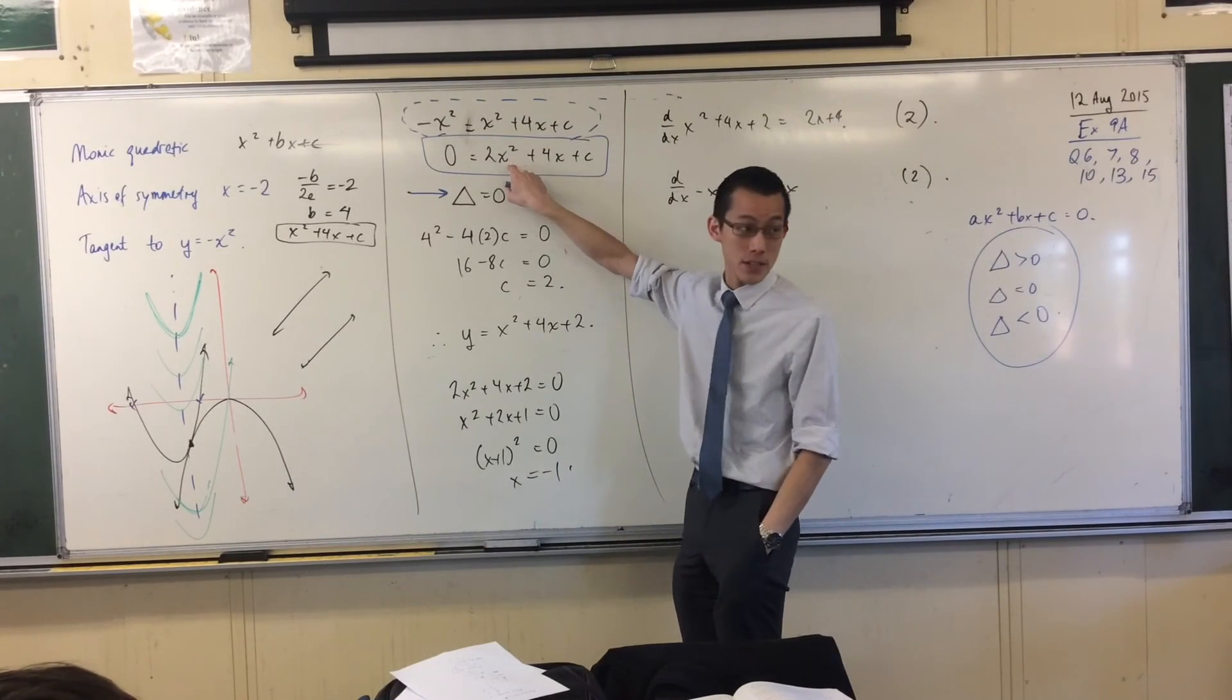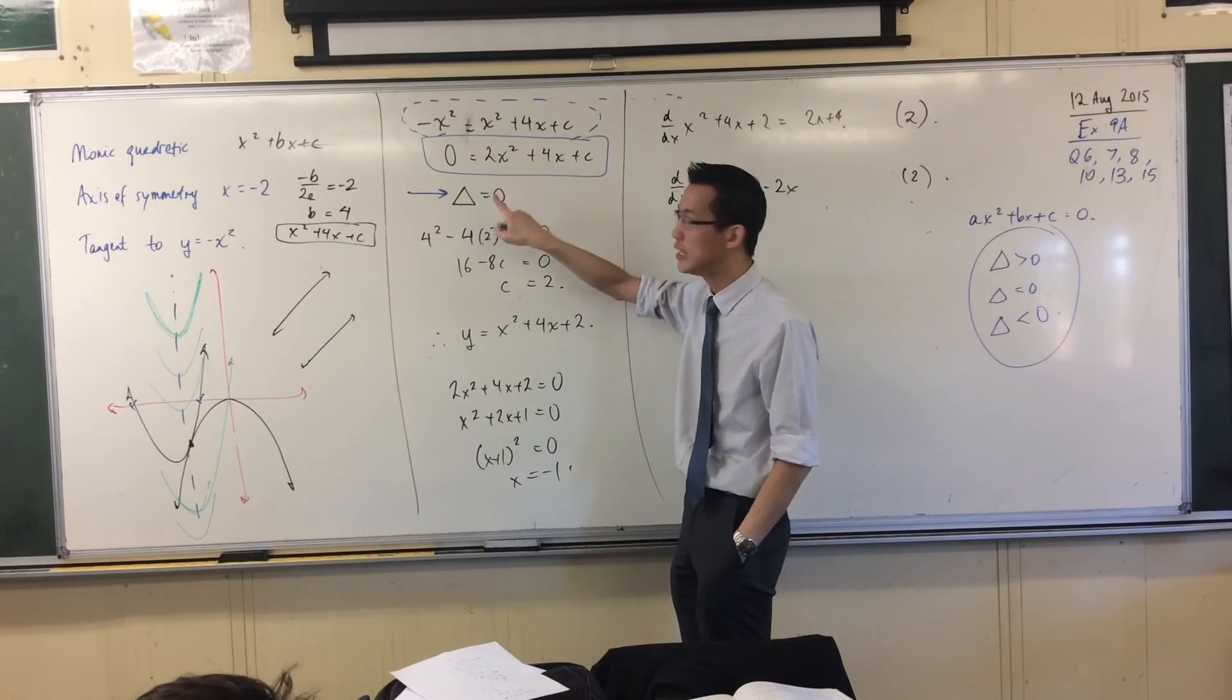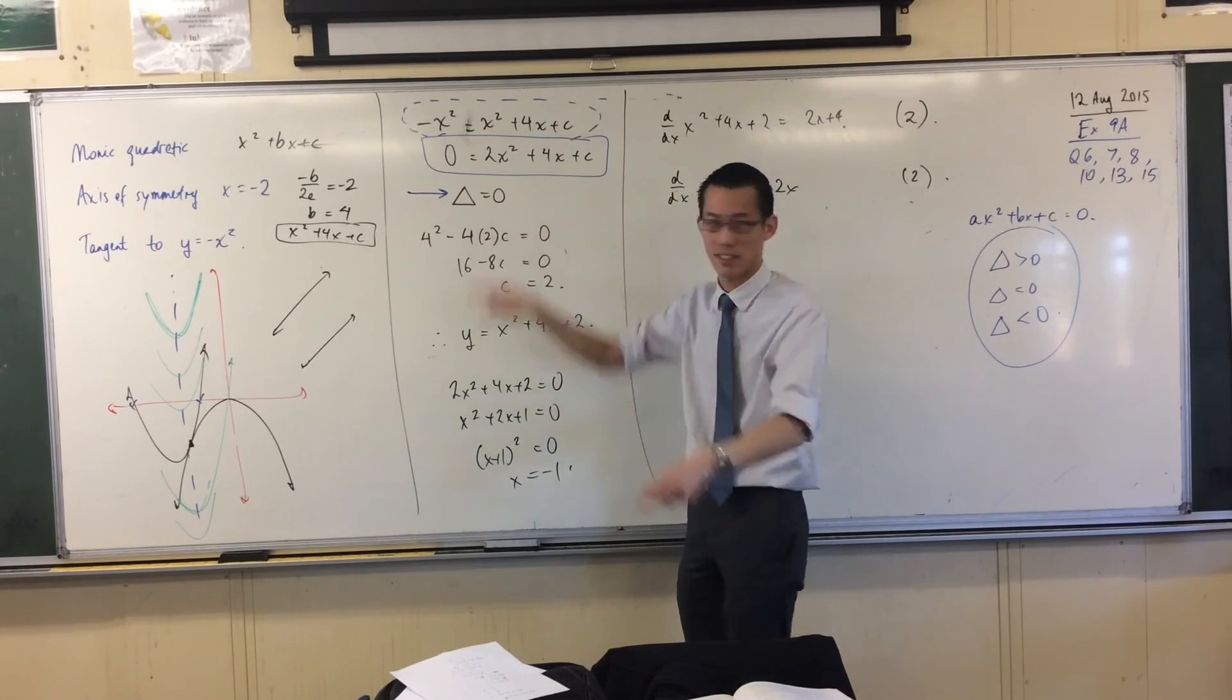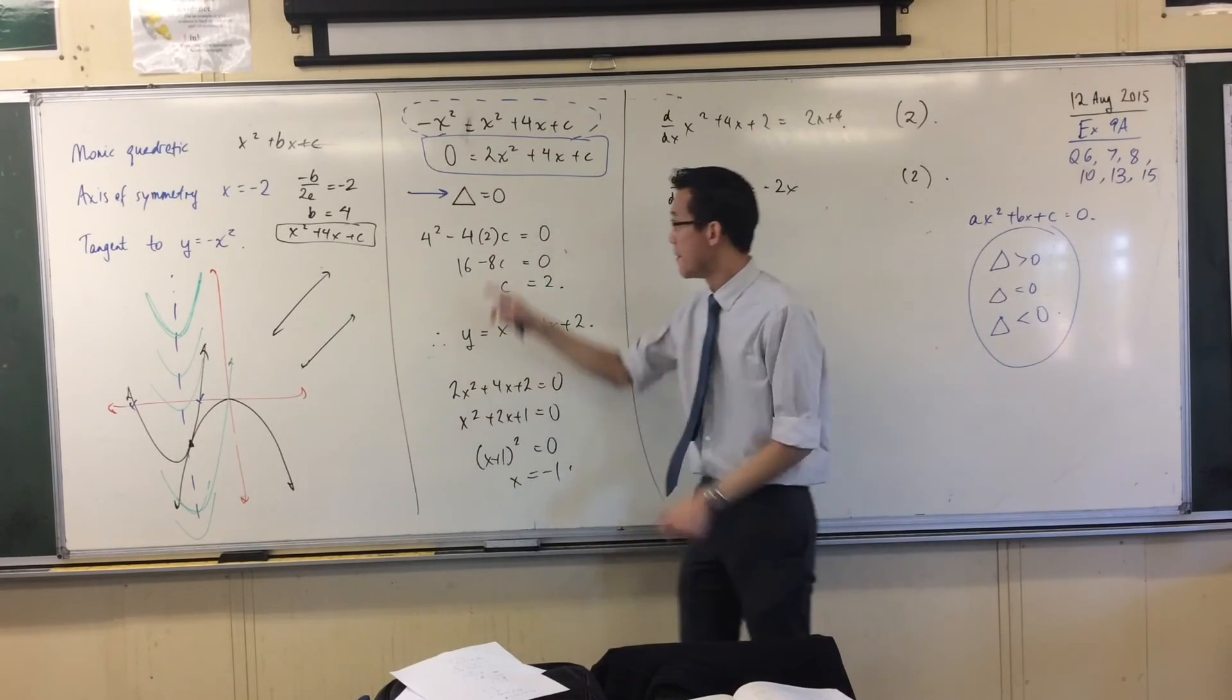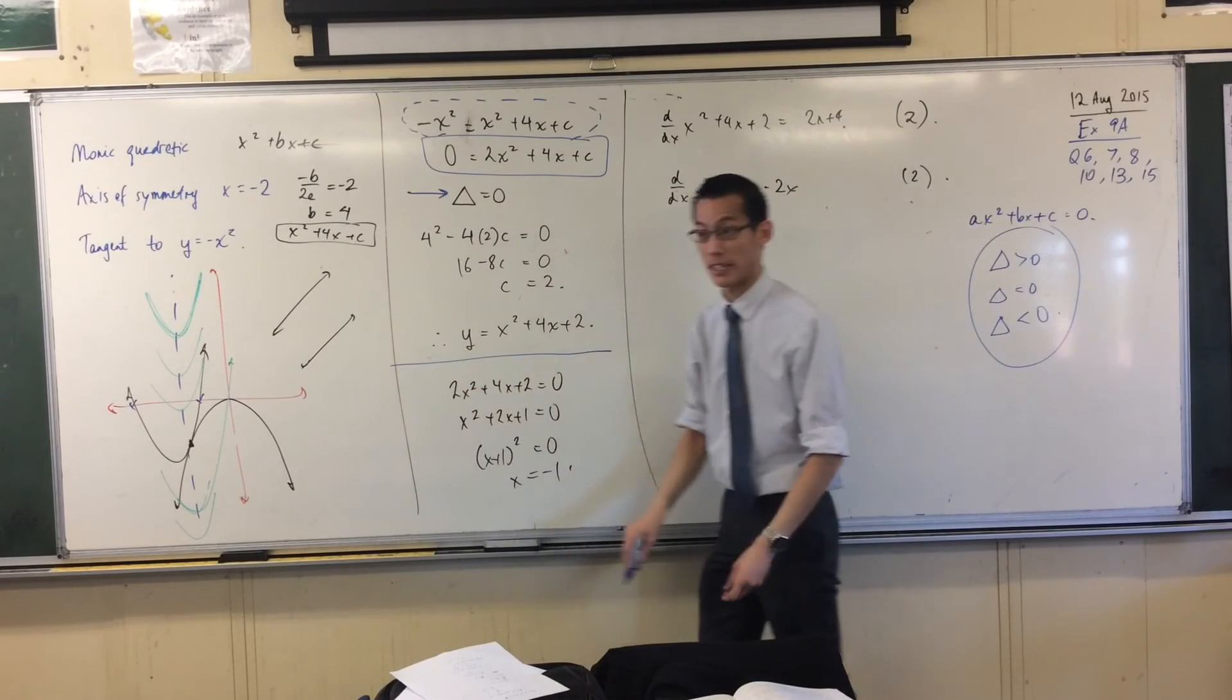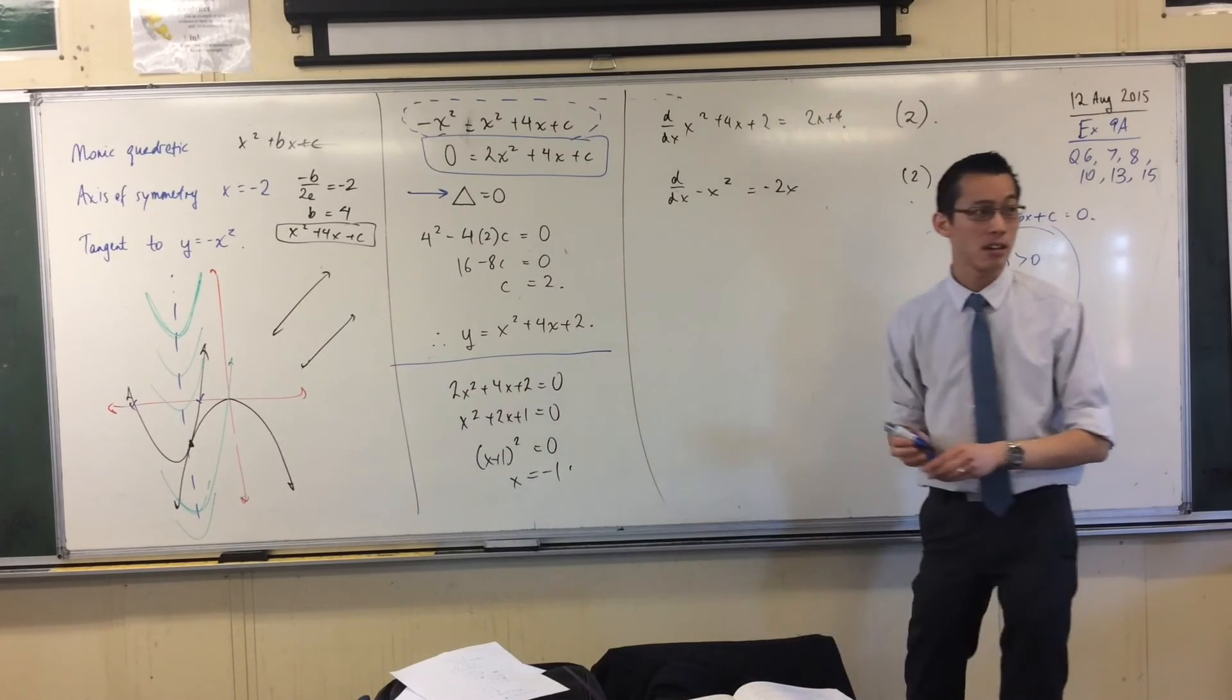So, I think, once you see points of intersection, and I only want one of them, or if you like, I want a double point of intersection, just like we say, we want a double root, that's really the insight you need, and then the rest just kind of falls out. That's where the question ends, really. You don't need to do any of this, this is just a check.